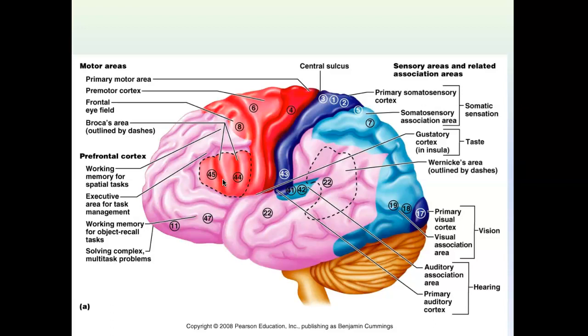Phineas Gage is referenced in your outline. A metal rod went straight through his prefrontal cortex and he survived the accident, but his personality completely changed. This is why we know the prefrontal cortex is associated with personality. Much of our knowledge about the brain comes from studying people's accidents or diseases and correlating brain areas with symptoms.